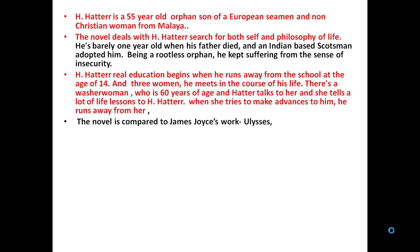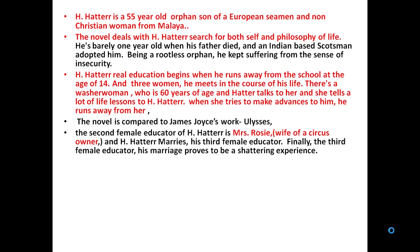The novel is compared to James Joyce's work 'Ulysses', because just like in Ulysses we have the central character Stephen who goes on a journey to discover himself, similarly in this work we have Hatter who embarks on a journey to know his own self. The second female educator of H. Hatter is Mrs. Rosie, who is the wife of a circus owner. H. Hatter eventually marries his third female educator.